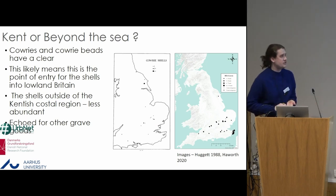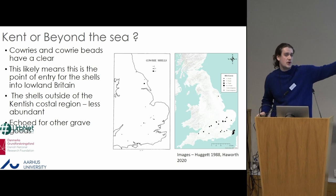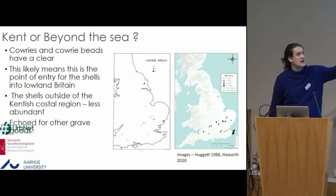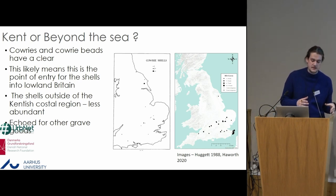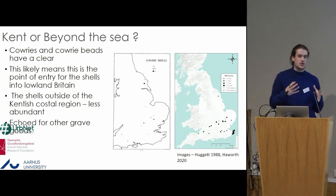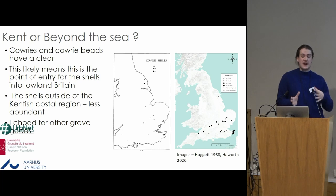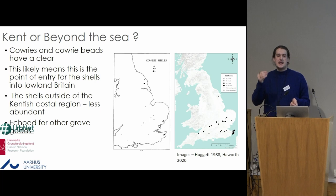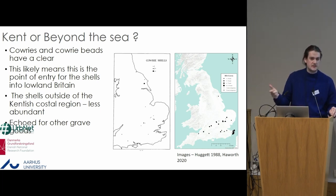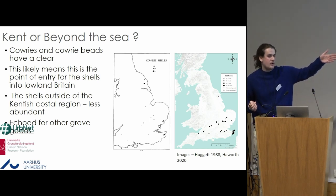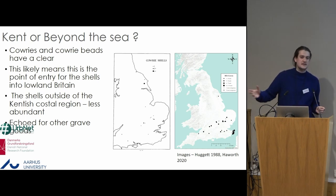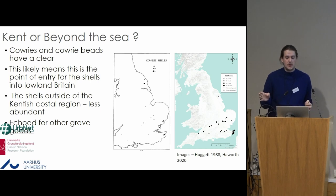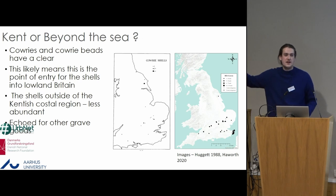Here are two distribution maps of whole cowrie shells and beads cut from Indian Ocean cowries found in graves. As you can see — the map on the left is quite old — there's a clear focused distribution in Kent, and I think that really focused distribution suggests Kent is the entry point for these things. I've talked about how specific the people choosing these cowries are. Maybe — unlike those first two examples — these people actually know what these are and know these species are coming from the Indian Ocean. But do people in the further inland distribution associate them with people from Kent, thinking 'I can get these things from the people on the coast down the road'?